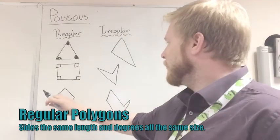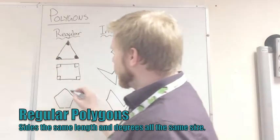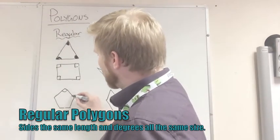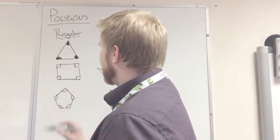Then we have a pentagon, 1, 2, 3, 4, 5. 5 sides, we can see all the lengths are the same, and if we draw on the angles, we can see they are all the same size.